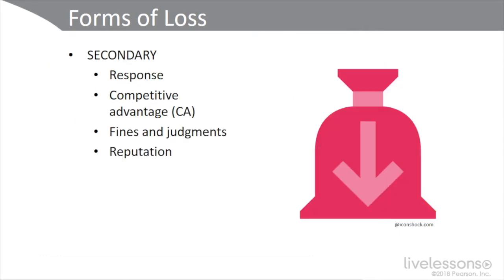Secondary loss, which can be much more expensive, comes in four types: response, competitive advantage, fines and judgments, and reputation. Secondary loss is the most difficult to quantify, more time consuming, and the losses can be exponential. Typically with primary loss we can get a pretty good handle on one-time costs, but secondary costs can have a life of their own — they can actually be cascading costs.